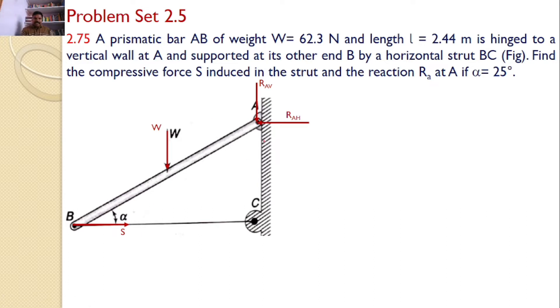Now let us apply the equilibrium equation sigma FX equals zero. There are two forces acting along X axis. Hence I can say RAH equals S. Next, sigma FY equals zero. There are two forces acting in the downward direction. Hence I can say RAV plus W equals zero. This is the second equation.